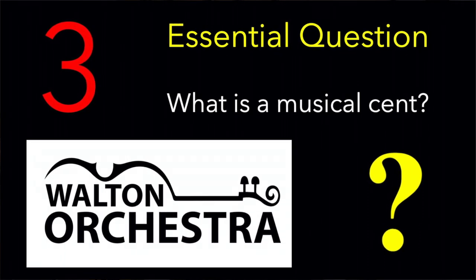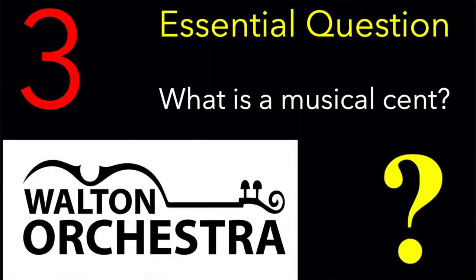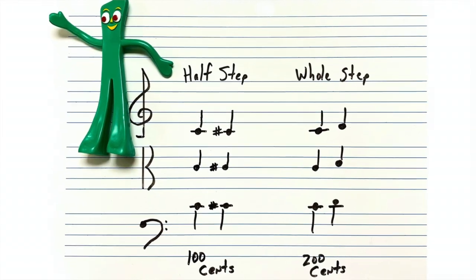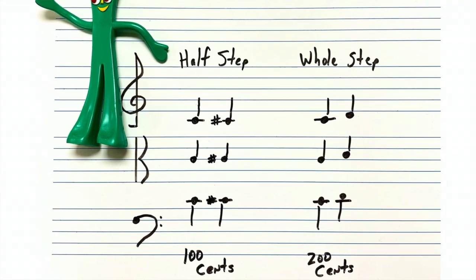So what is a cent? A cent is a musical measurement. Just like this penny is a hundredth of a dollar, a musical cent is a hundredth of a half step. That means there are 200 cents in a whole step. If you were 50 cents off, you would be right in between two half steps — it would neither be an A nor an A sharp, so to speak.